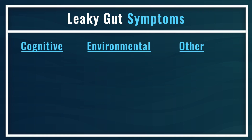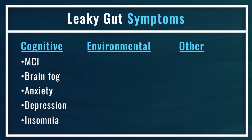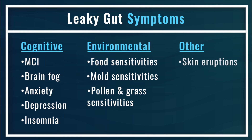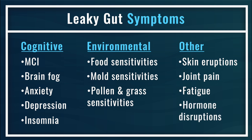We've discussed this in detail on the podcast in the past, but symptoms may include, but are not limited to, cognitive impairments like mild cognitive impairment (MCI), brain fog, anxiety, depression, insomnia, and even environmental sensitivity. This includes food, mold, or sensitivity to pollens and grasses. It may also include skin eruptions of various sorts, joint pain, fatigue, and even altered conversion, metabolism, or release of certain hormones.